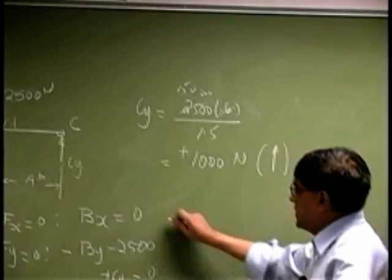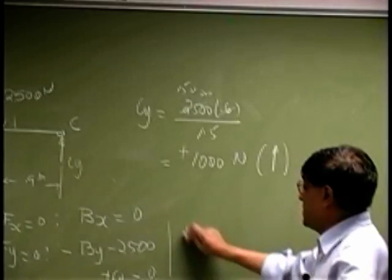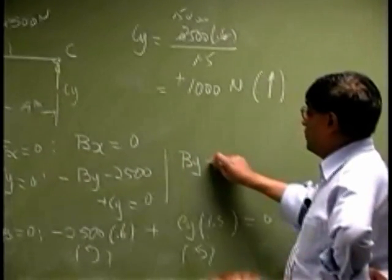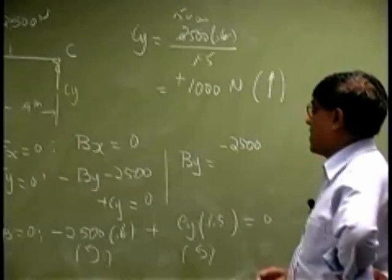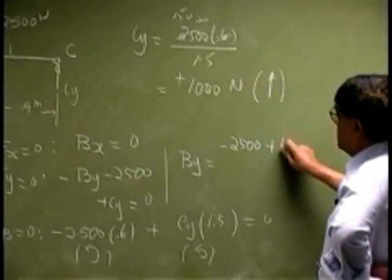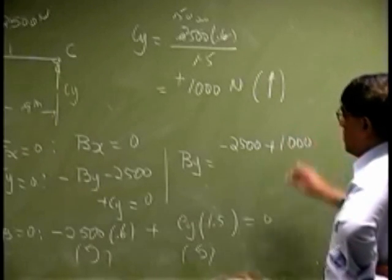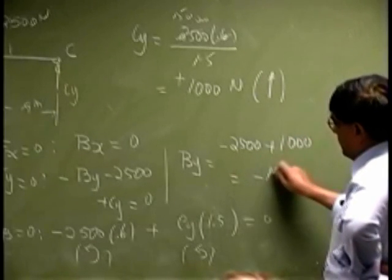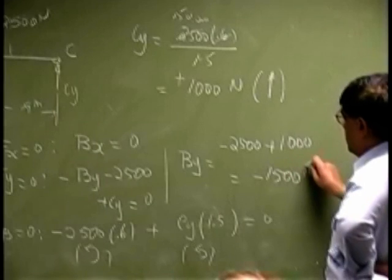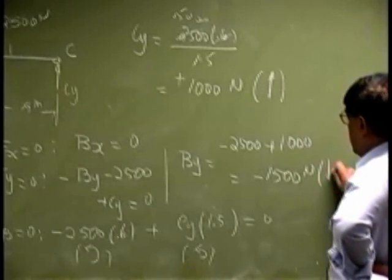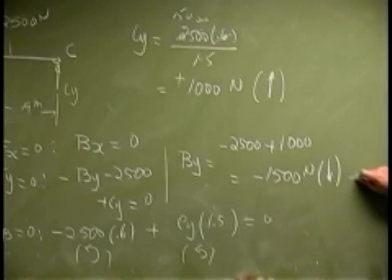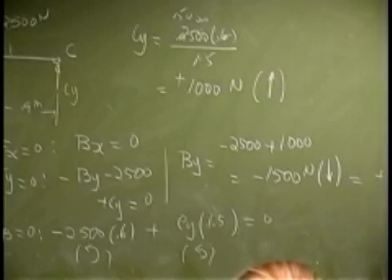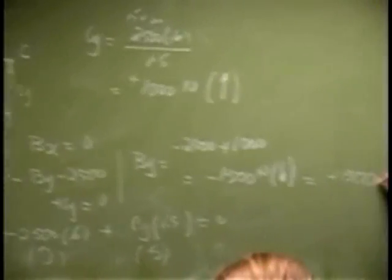So once I have this, I can come back here, I should be able to solve for BY, that will be negative 2500 plus 1000. So that is negative 1500 Newton, and it was taken positive going down.